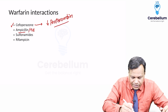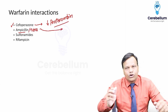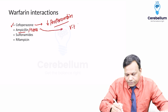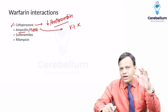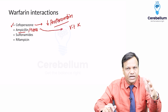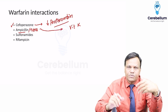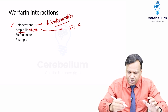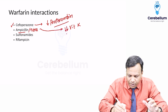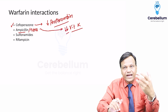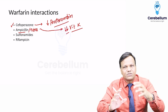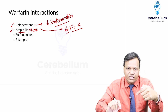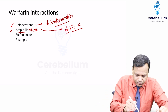Second is the interaction with broad-spectrum antibiotics like ampicillin or tetracyclines. Normally, gut bacteria present in the GIT produce vitamin K, and warfarin's action is to inhibit vitamin K. When we give broad-spectrum antibiotics, they kill the normal gut flora, leading to decreased production of vitamin K. When vitamin K is already low, warfarin's action is enhanced, so toxicity and bleeding can occur.